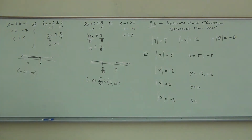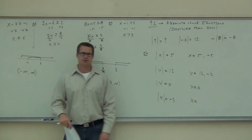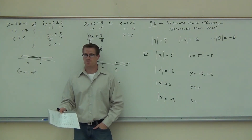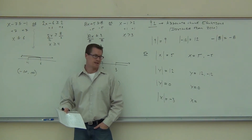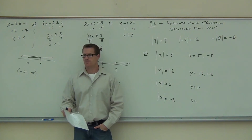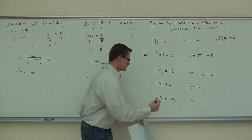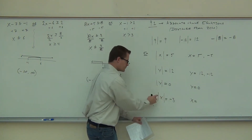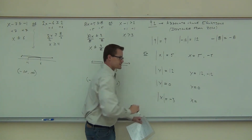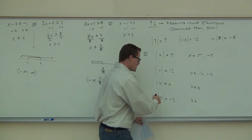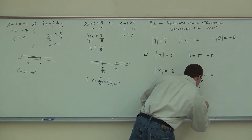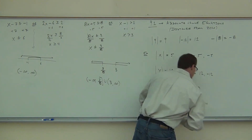Absolute value of x equals negative three — what are you going to get out of that one? You can't do it. Why can't you do it? You can't get a negative number out of absolute value. If I plug in three, the absolute value of three is three. If I plug in negative three, the absolute value of negative three is three — not negative three. So if you have just an absolute value and it equals a negative, you know that's no solution.